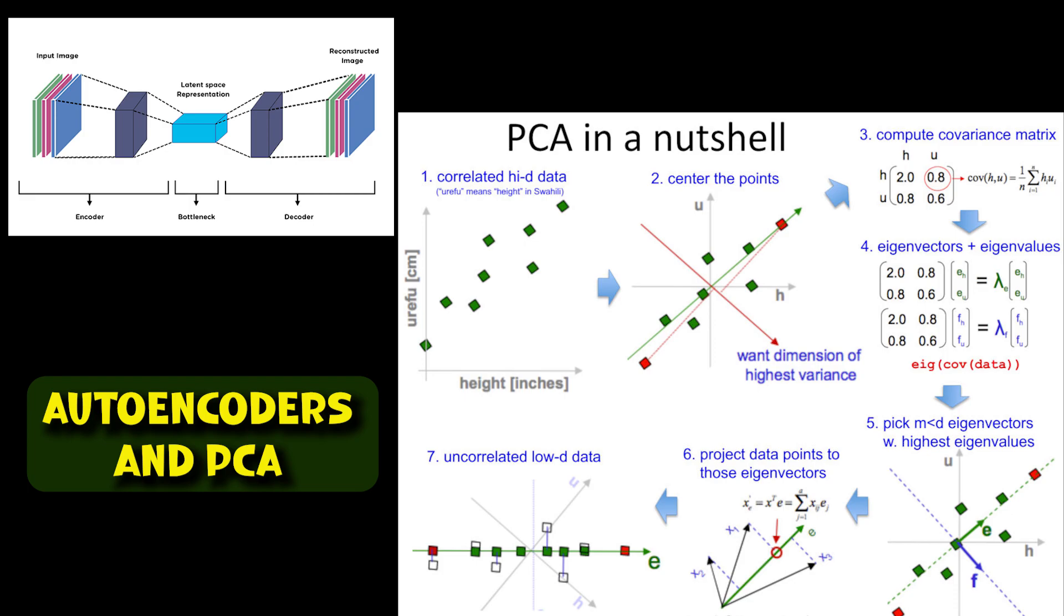Fourth, autoencoders are more versatile and can be used for a variety of tasks, such as denoising, anomaly detection, or generating new data samples, while PCA is primarily used for dimensionality reduction, data preprocessing, and visualization. In summary, both autoencoders and PCA are dimensionality reduction techniques, but they differ in their approach, assumptions, and capabilities.